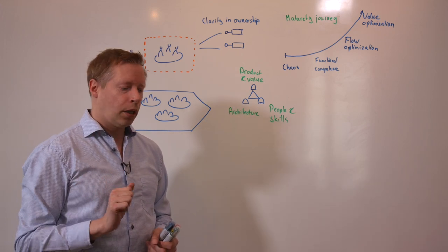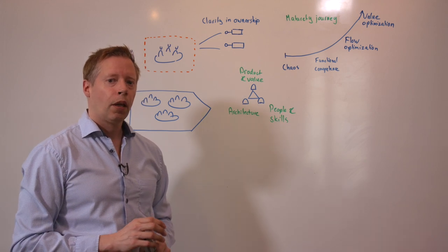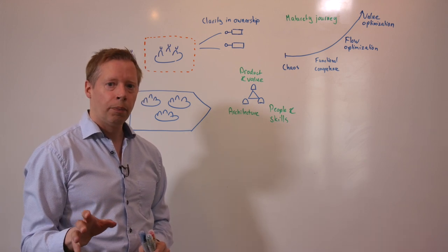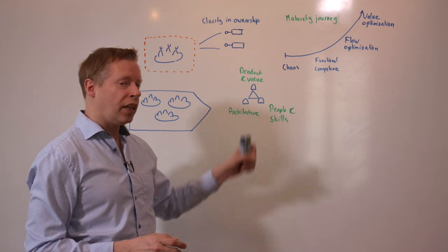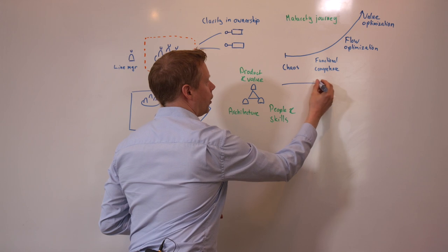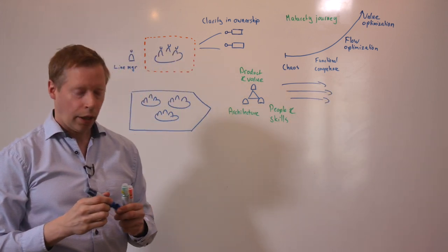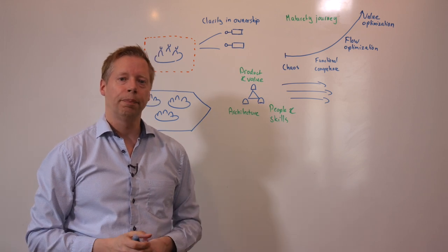Now this is important because if these pull in completely different directions, the organization will do the same. So this pattern is there to ensure that these people pull in the same long-term direction and thereby enable their surrounding to do the same.